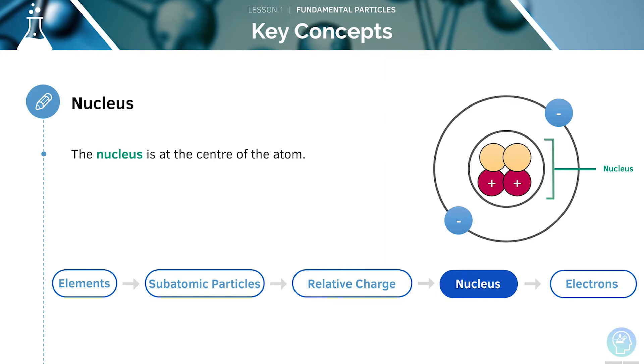As we've just seen, the nucleus is at the very centre of the atom. From our previous diagrams, you may be able to recall that we can find both protons and neutrons in the nucleus of an atom.